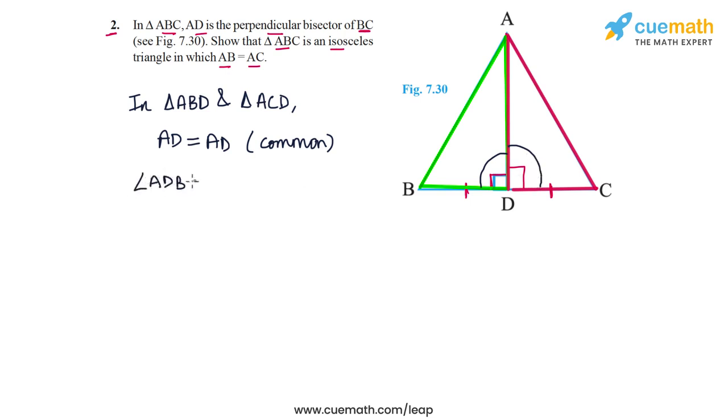Well, both of them are 90 degrees, so angle ADB is equal to angle ADC, both equal to 90 degrees. Also, because D is the midpoint of BC—because AD bisects BC—we noted that BD is equal to CD.